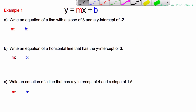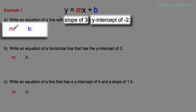The format is right there: y equals mx plus b. As long as you have a slope and a y-intercept, you've got yourself an equation. First question, example one: write an equation of a line with a slope of three. I've already listed my slope and y-intercept — the slope is three, the y-intercept is negative two.